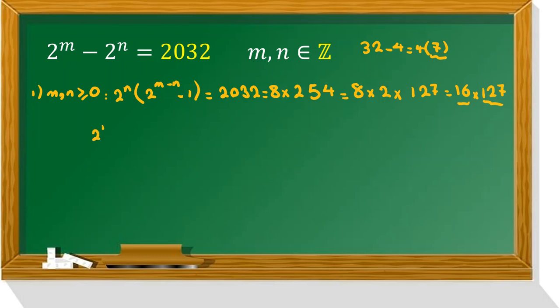So here you calculate 2 to the n equals 16. 2 to the m minus n minus 1 is 127. So from here, n is 4. From here, if you add by 1, 2 to the m minus n is 128, which is 2 to the 7. So m minus n is 7.